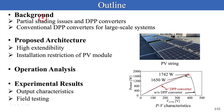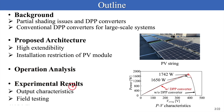This slide shows the outline of this presentation. Firstly, I will briefly review the partial shading issues and DPP converters as the background. Secondly, I will introduce the details of the proposed architecture. Next, operation analysis will be performed. Lastly, I will show the experimental results using a prototype.